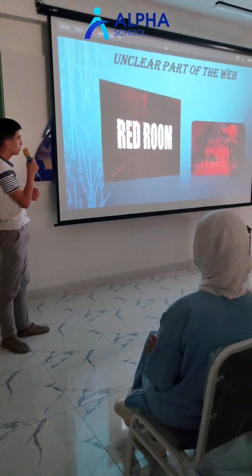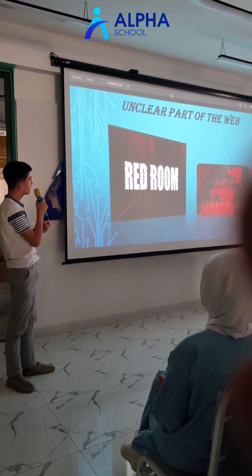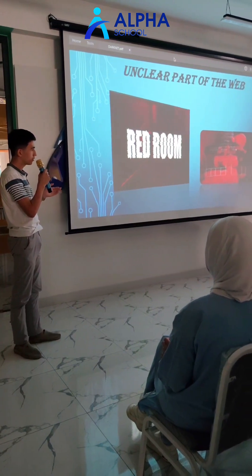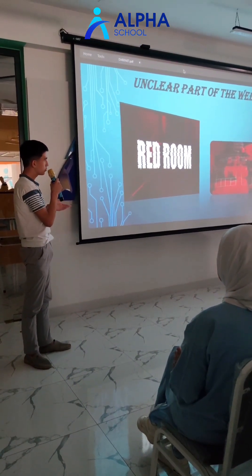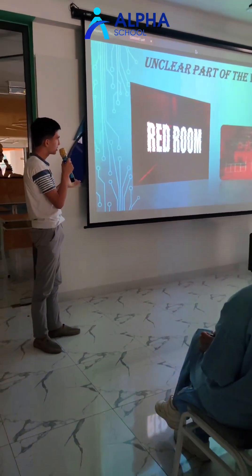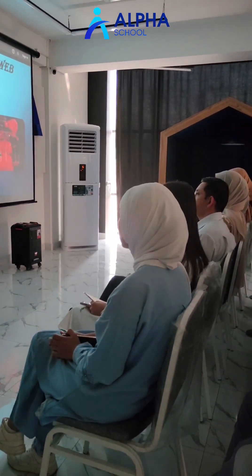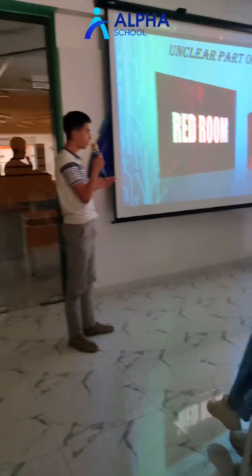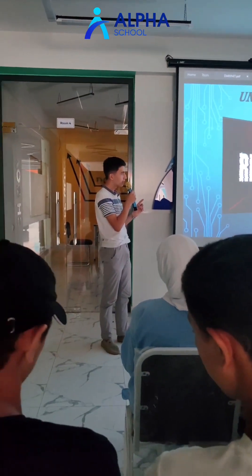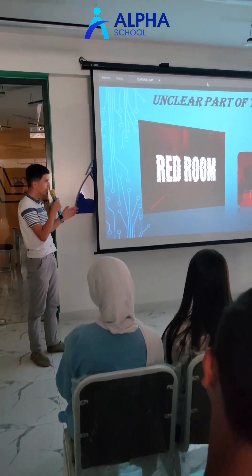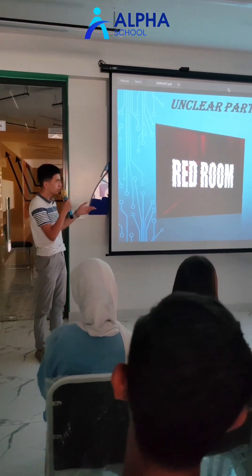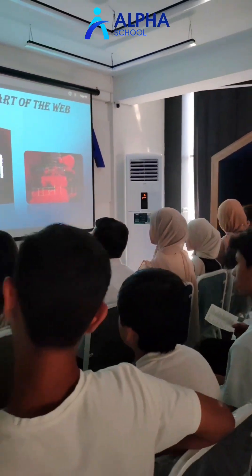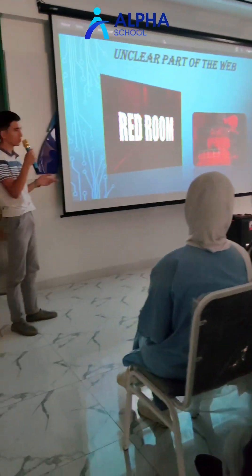This is an unclear part of the web — it's called the Red Room. It's unclear because there is some evidence to support the existence of such activities. In this room, there are executioners — killers and maniacs. A kidnapped person is placed on a chair. It is streamed live, and viewers pay the maniacs to instruct what to do — for example, break her neck, break her finger, or break her throat. You can even pay to have them killed, but it costs millions of dollars.